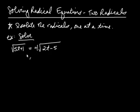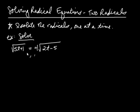We're solving the square root of 5t plus 1 is equal to 4 multiplied by the square root of 2t minus 5. I have two radicals — two square roots. Now one of them is already isolated: the one on the left, the square root of 5t plus 1.